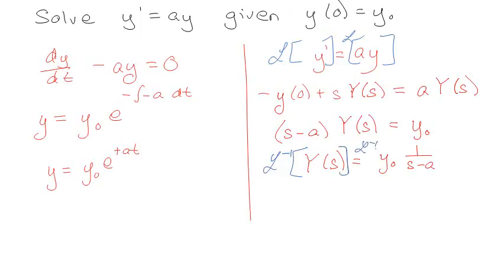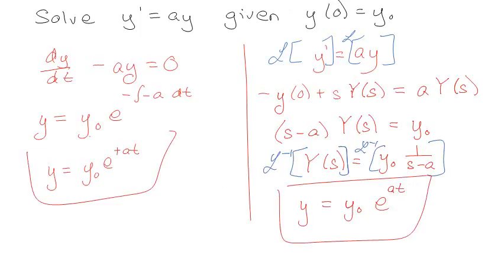So I'm going to move the y naught to either side and the a to this side, so I have s minus a is multiplied by this and it gives me this. And what's amazing about this is I can go y is equal to y naught, one over s minus a, and then I can inverse Laplace both sides.